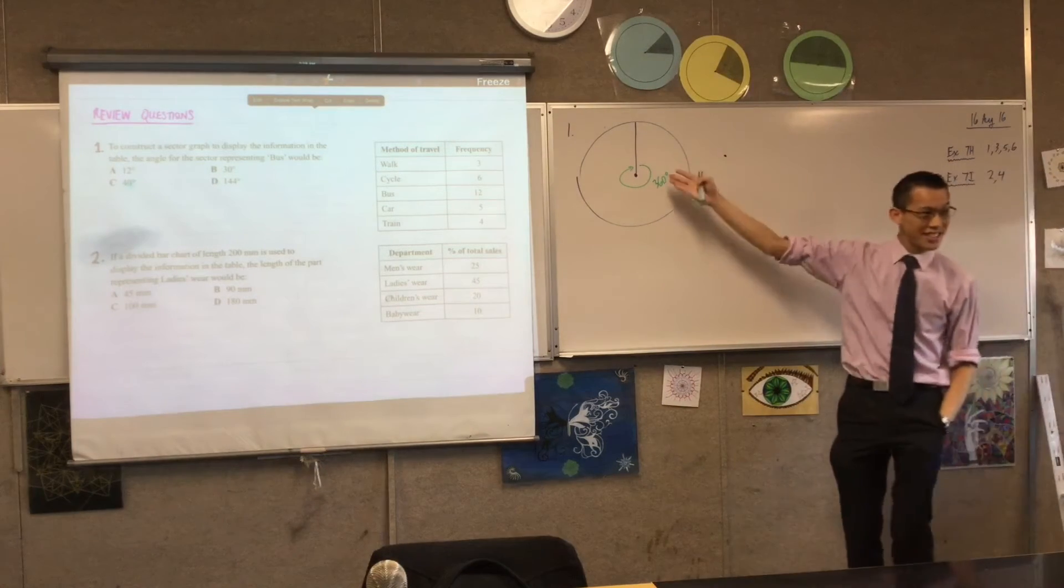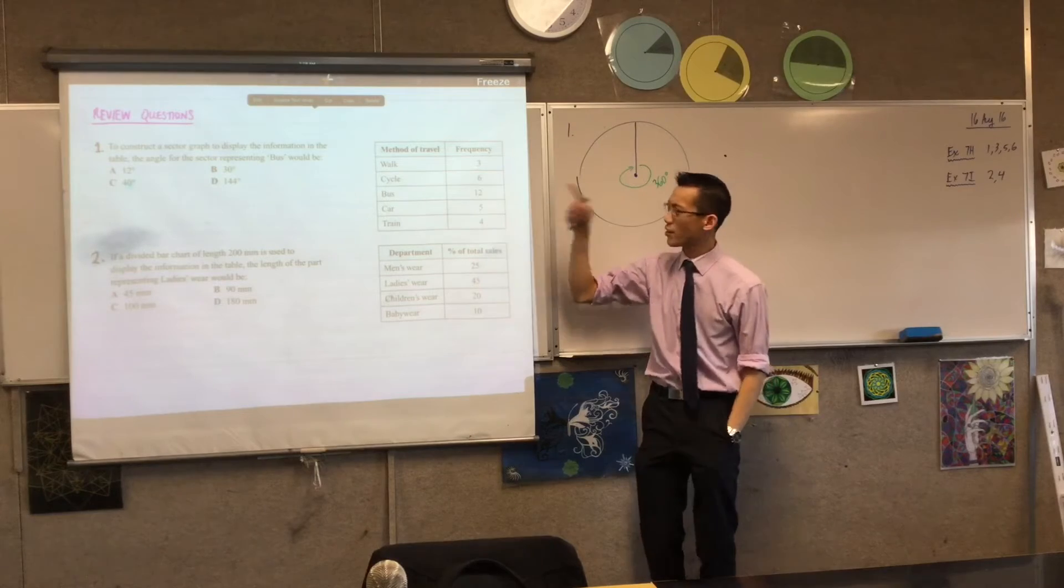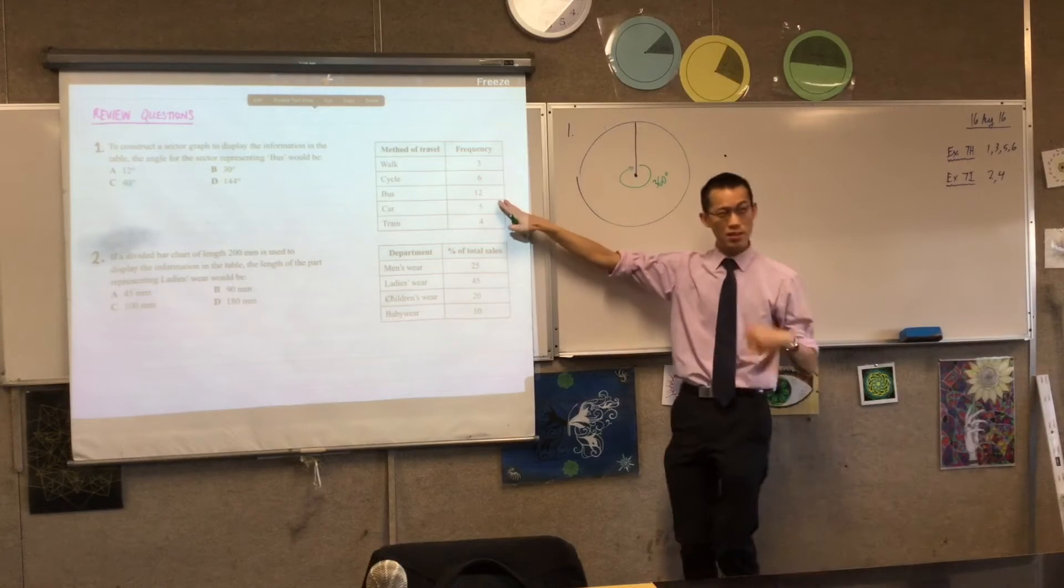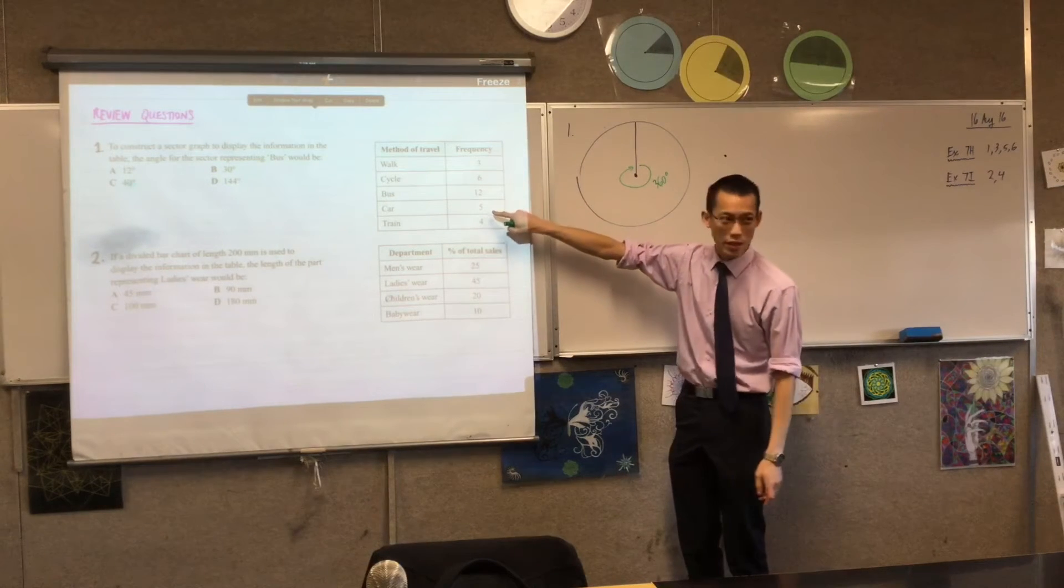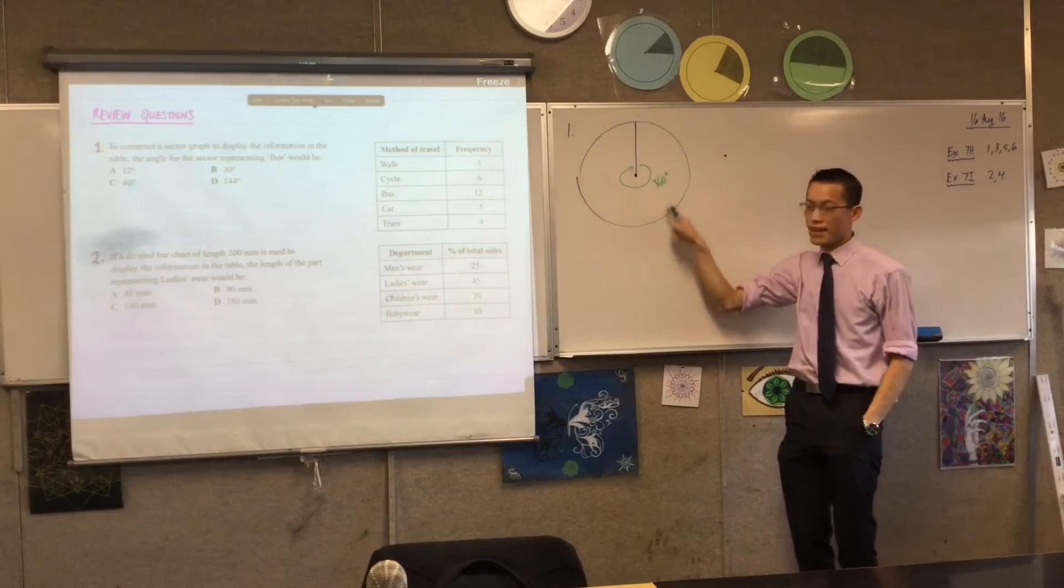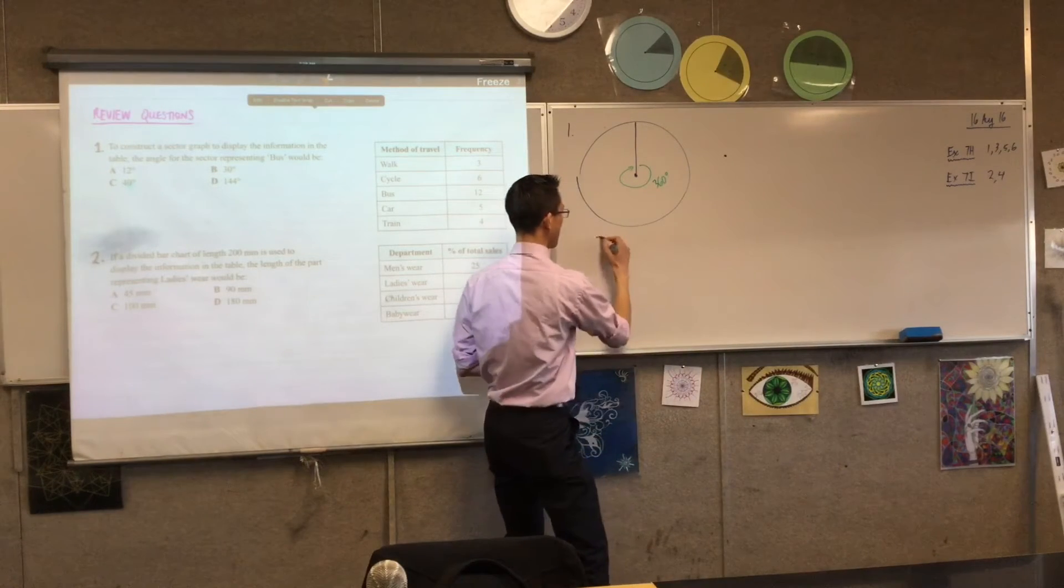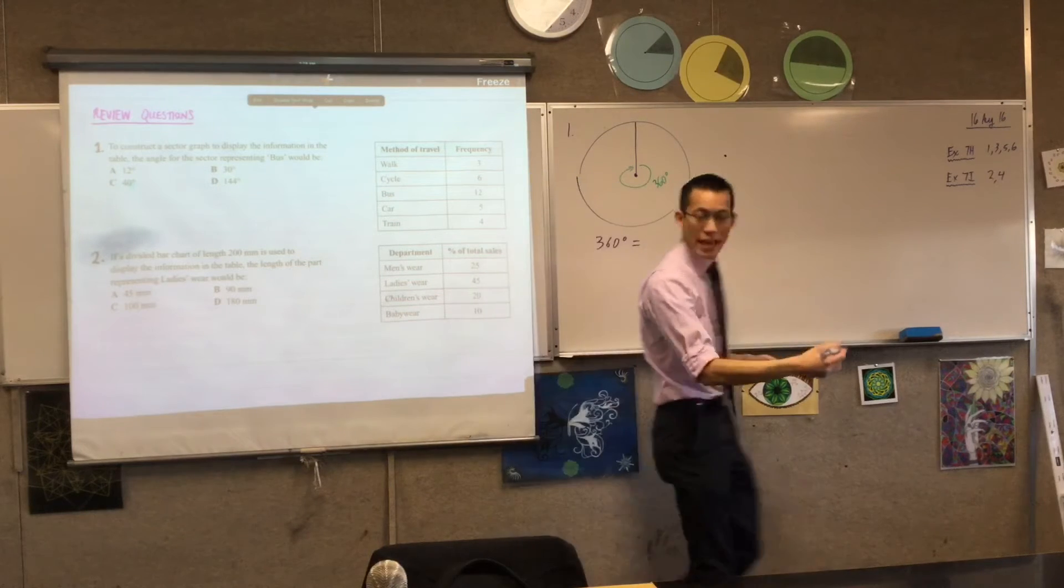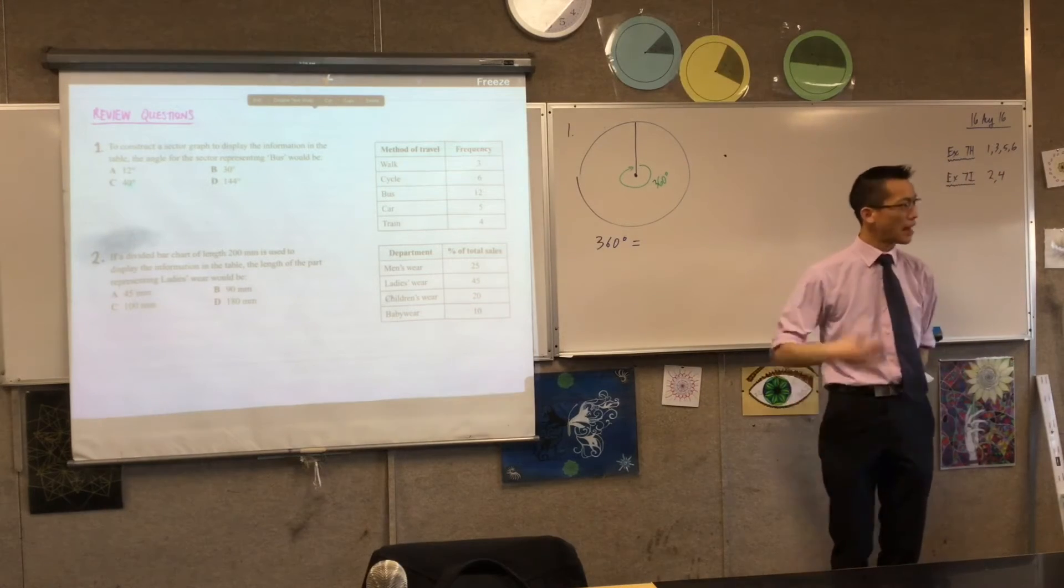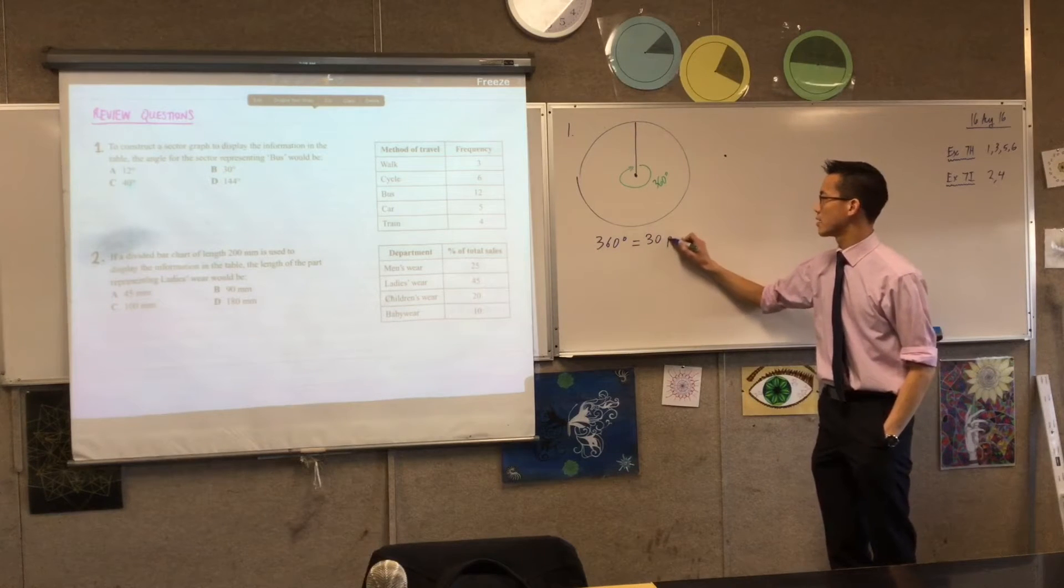So 360 degrees, therefore, needs to represent whatever the sum of each of these is. So, frequency, if you add it up with me, 3 and 6 is 9, plus 12 is 21, 26, and then 30. Okay, so therefore, there should be all the way around those 360 degrees. I'm even going to write this. 360 degrees should represent 30. What are these things? These are people, right? These are people, and they are travelling in a particular way. So 360 degrees represents 30 people.